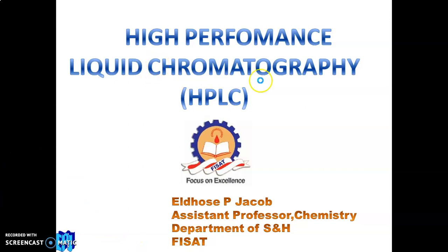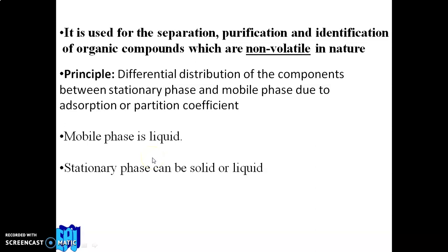From the name, it is clear that this is liquid chromatography, so the mobile phase is liquid. The stationary phase can be either solid or liquid. This technique is used for separation, purification, and identification of organic compounds that are non-volatile in nature. If a compound is volatile, we use gas chromatography, but HPLC is mainly used for non-volatile components.